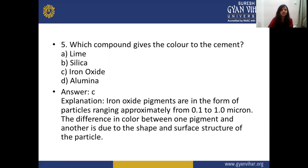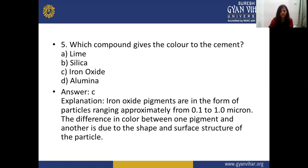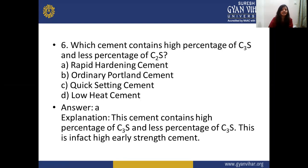Which compound gives color to cement? Options: Lime, Silica, Iron oxide, or Alumina. The answer is C — Iron oxide. Iron oxide pigments are particles ranging from approximately 0.1 to 1 micron; the difference in color between pigments is due to shape and surface structure of the particle. Which cement contains high percentage of C3S and less percentage of C2S? The answer is A — Rapid hardening cement, which contains high C3S and low C2S and is in fact a high early strength cement.